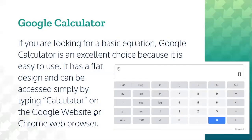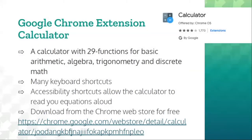Now suppose you are just looking for the basics — then Google Calculator is an excellent choice because it is easy to use. It has a simple design and can be accessed simply by typing 'calculator' in the Google search bar. There is also a Google Chrome extension which provides 29 different functions for basic arithmetic, algebra, trigonometry, and discrete math. It has many keyboard shortcuts, and the accessibility shortcuts allow the calculator to read out equations aloud. You can download the Chrome extension from the Chrome Web Store for free using this link.